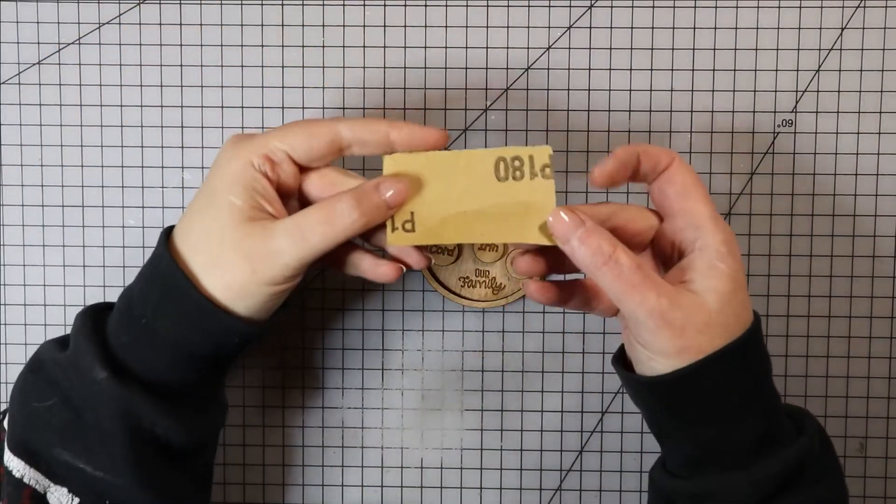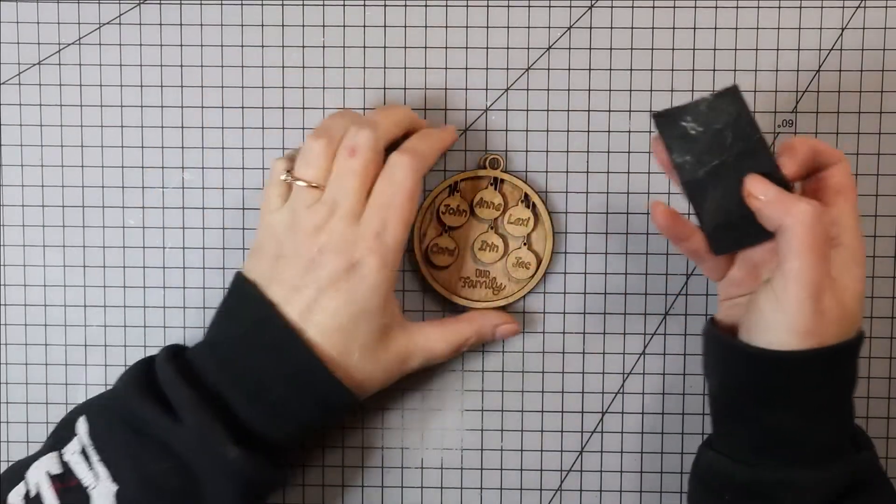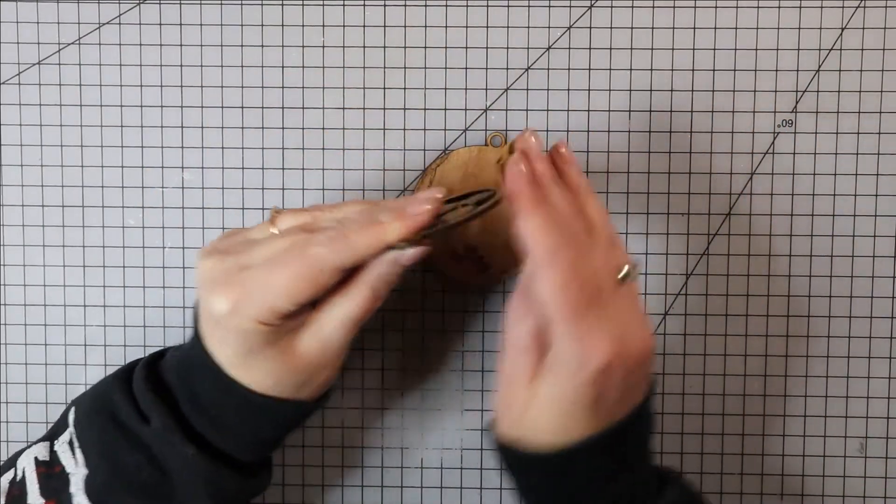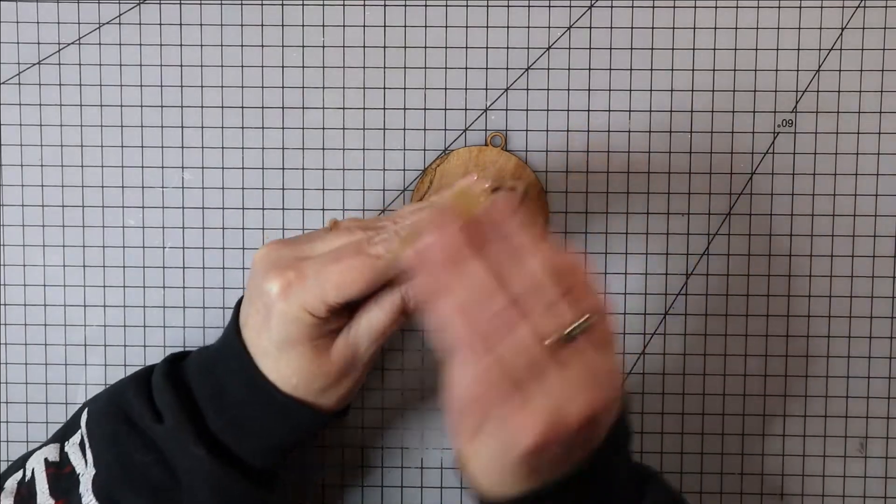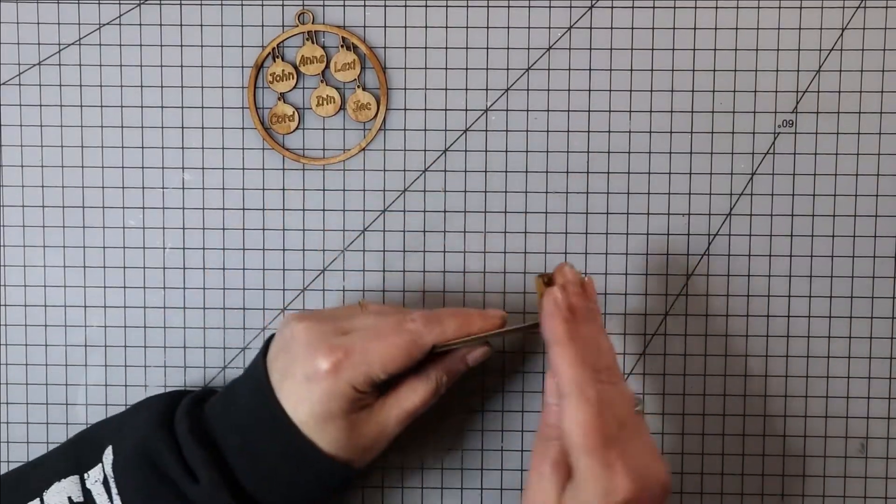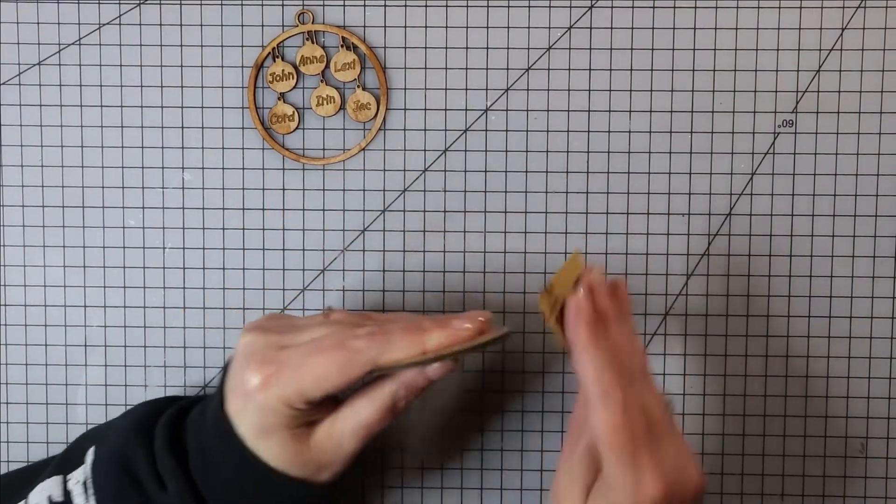Give the ornament a light sanding if you think it needs it. Use 180 grit or higher sandpaper to do that, and be really careful again to make sure that you don't break off any of those dangly bits.